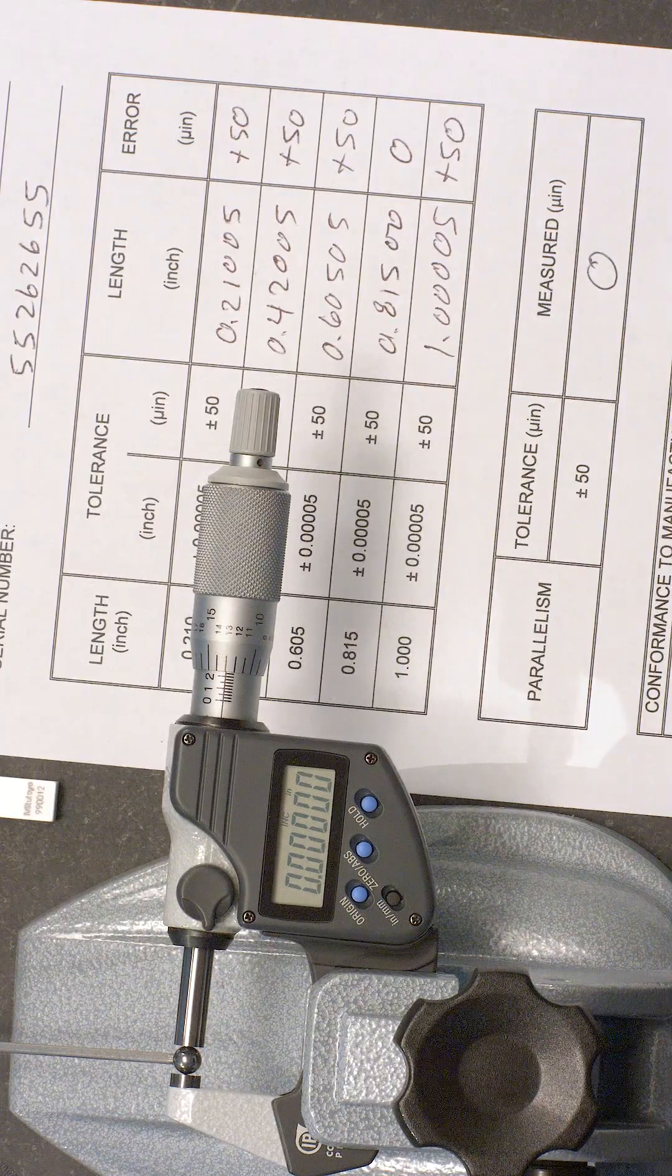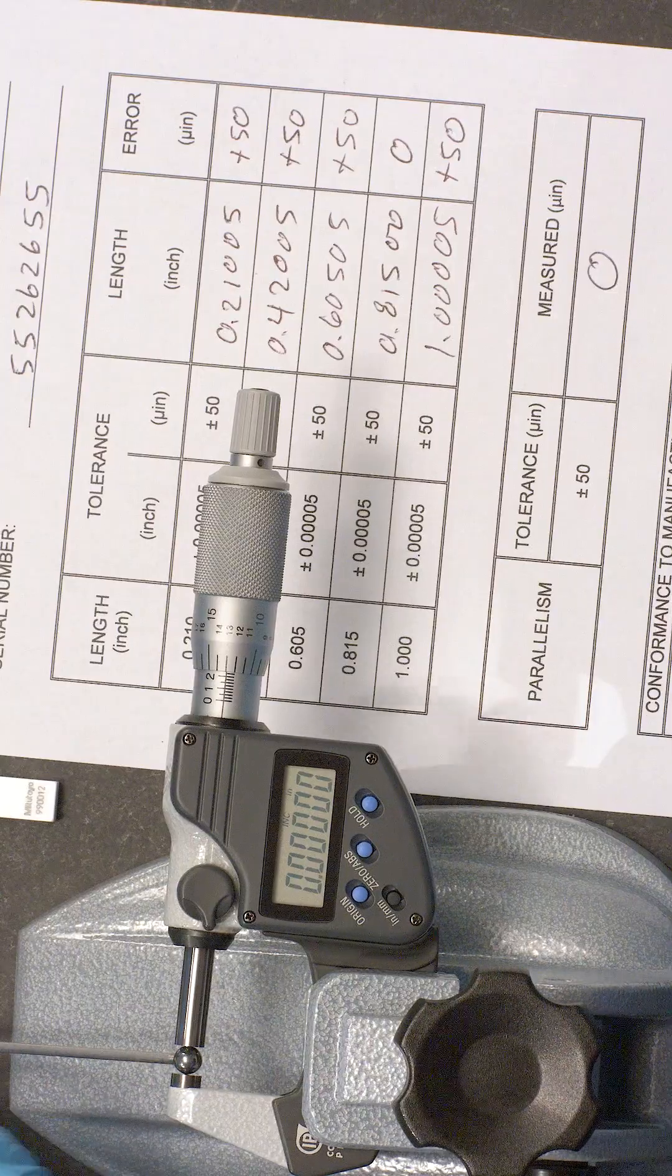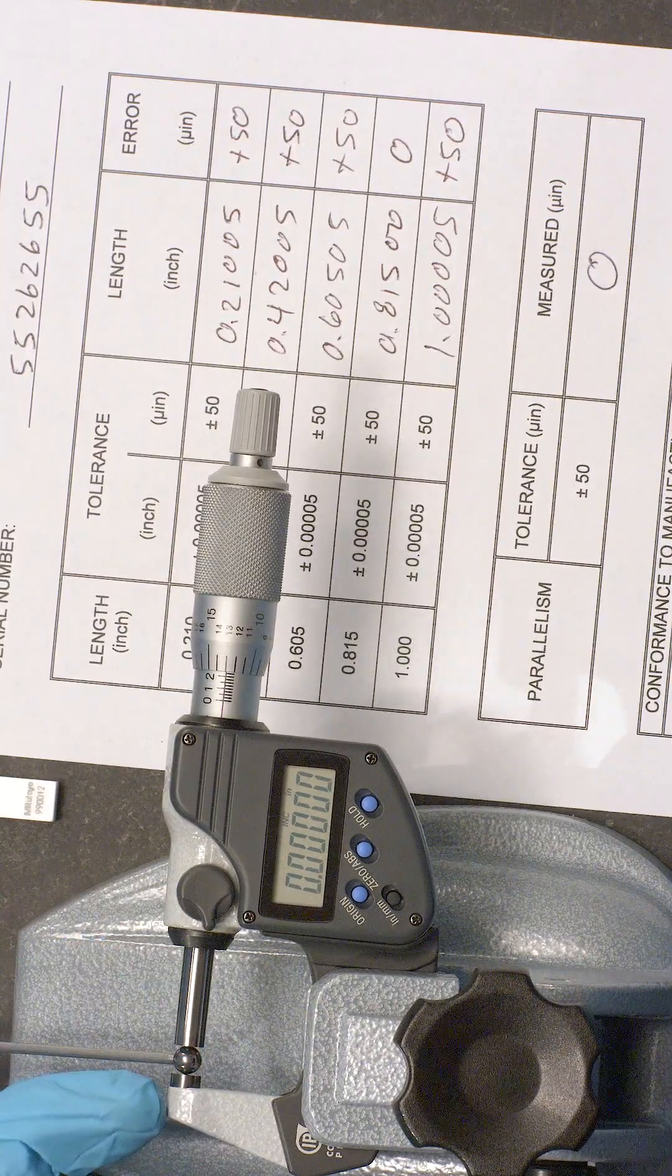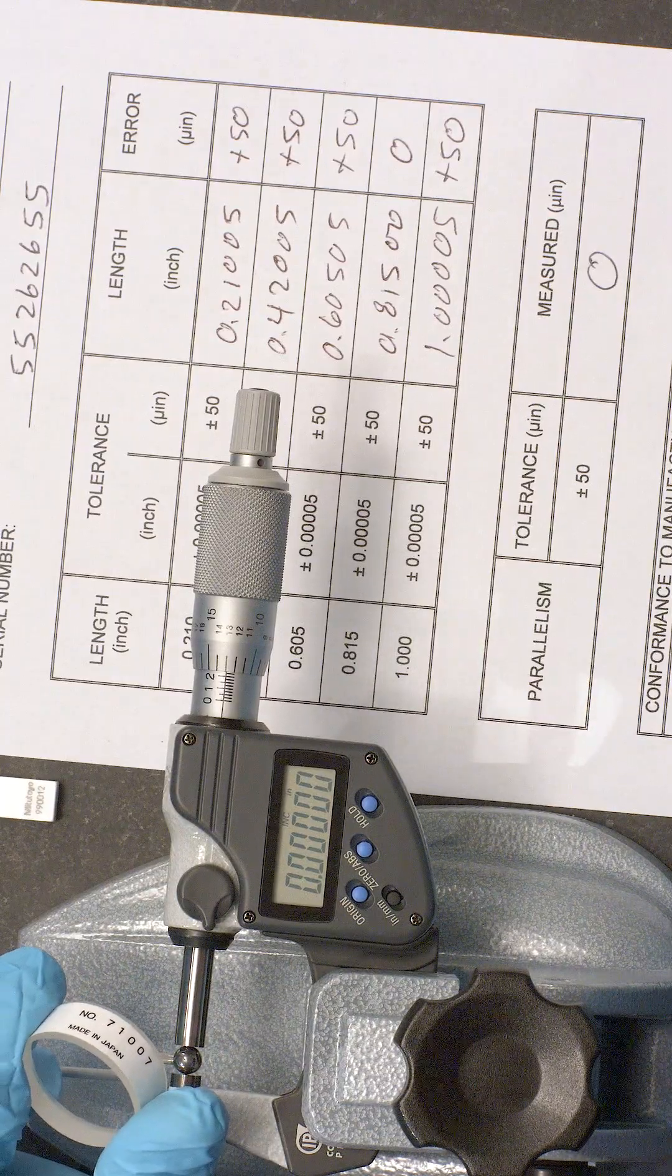We've also heard that some labs will use the optical parallel or optical flat if the test with the ball fails because you can get a better idea of why it's failing.